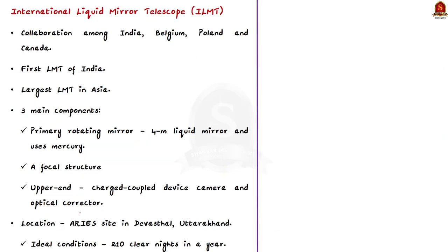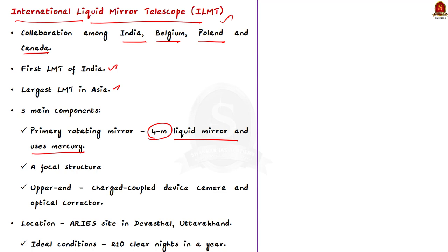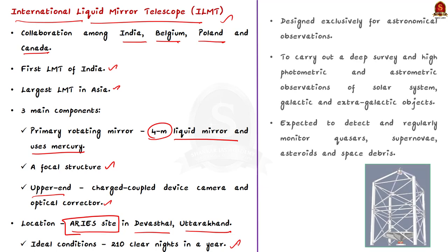The news article talks about the International Liquid Mirror Telescope (ILMT). It is built with a collaboration among India, Belgium, Poland, and Canada. It is the first liquid mirror telescope in the country and the largest in Asia. The three main components are: a primary rotating mirror — a 4-meter liquid mirror using mercury as a reflecting liquid — a focal structure, and an apparatus composed of a charged coupled device camera and an optical character. ILMT is kept at the Aryabhata Research Institute of Observational Sciences site in Devasthal, Uttarakhand, located at Devasthal Peak in the Central Himalayan Range. This site was chosen due to its approximately 210 clear nights per year.